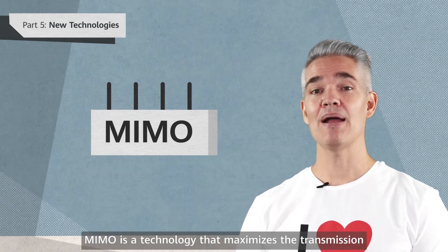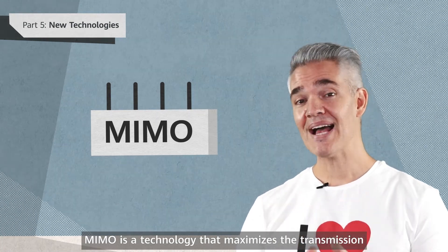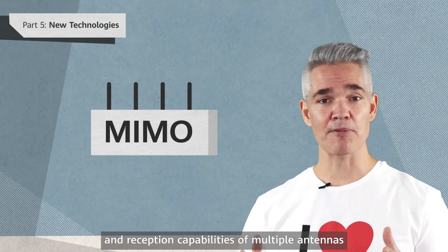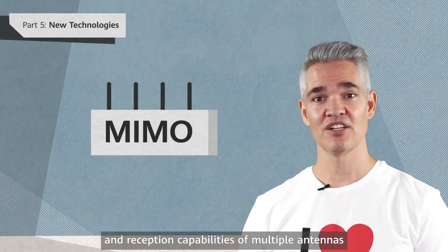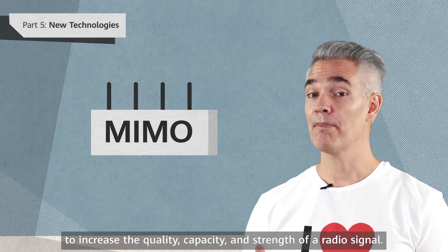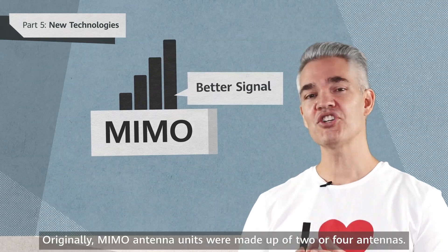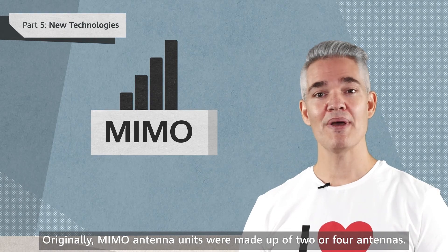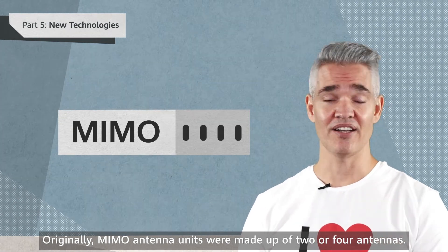In a nutshell, MIMO is a technology that maximizes the transmission and reception capabilities of multiple antennas to increase the quality, capacity, and strength of a radio signal. Originally, MIMO antenna units were made up of two or four antennas.